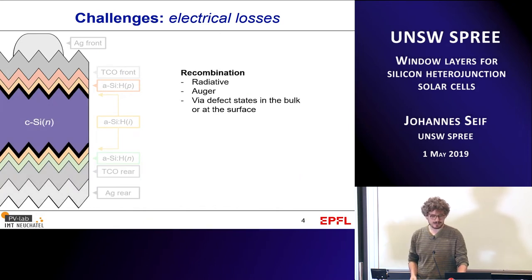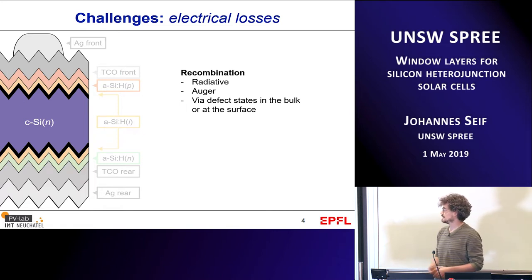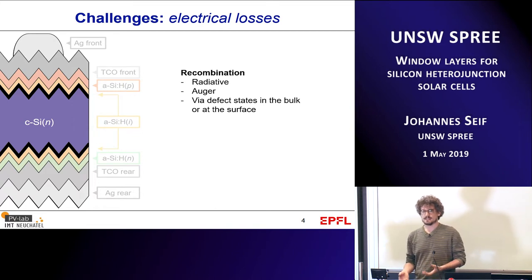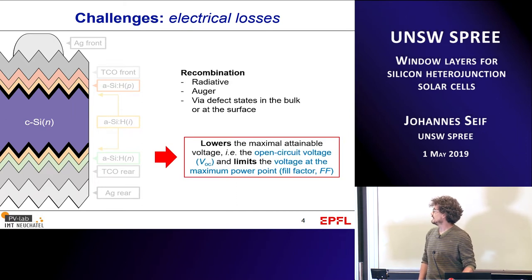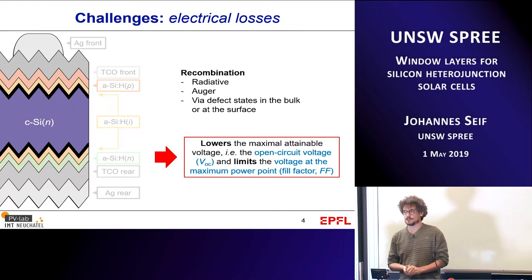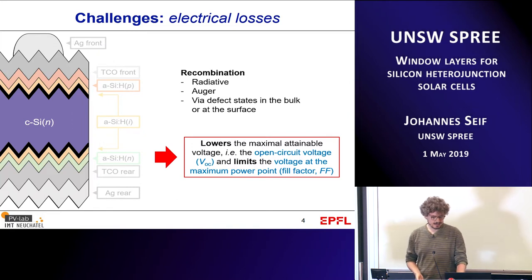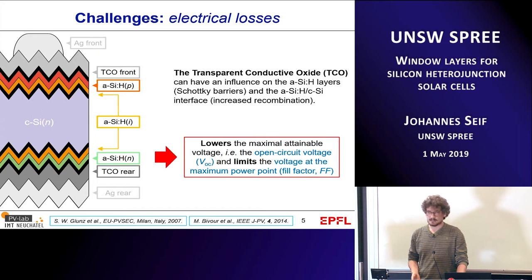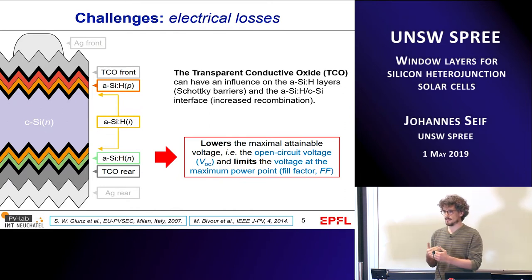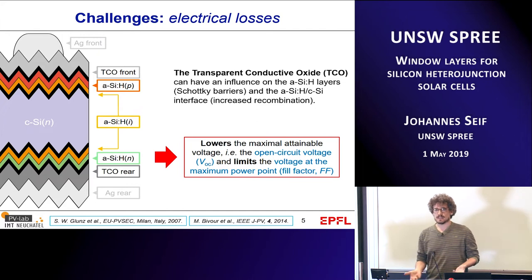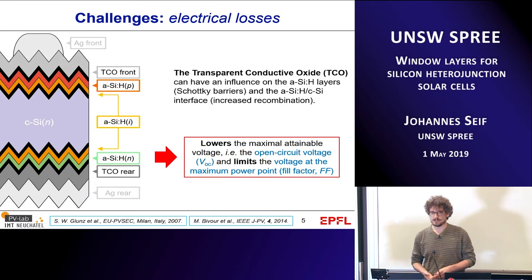Looking at electrical losses, the crystalline silicon wafer interface is by definition very defective. Besides intrinsic recombination in the bulk, there is surface recombination, which lowers the VOC and fill factor. Additionally, at the interfaces between the amorphous silicon and the TCO at the front and rear, Schottky barriers can form which also lower the fill factor.